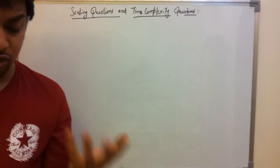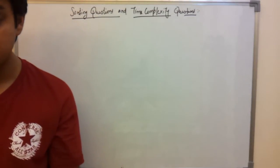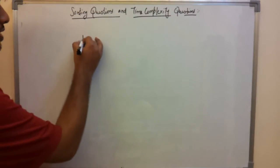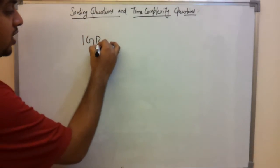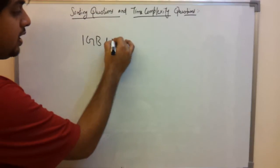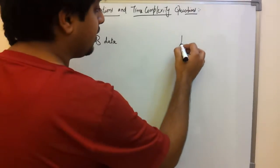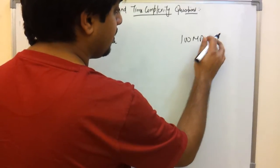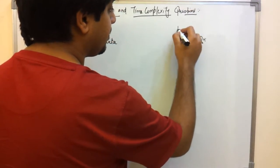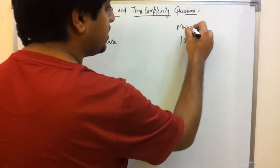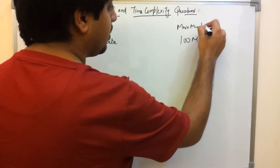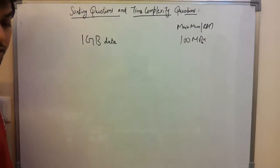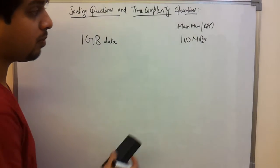Now let's say you have a problem where your main memory is 100 MB — that is RAM — and you have a much larger dataset to sort.